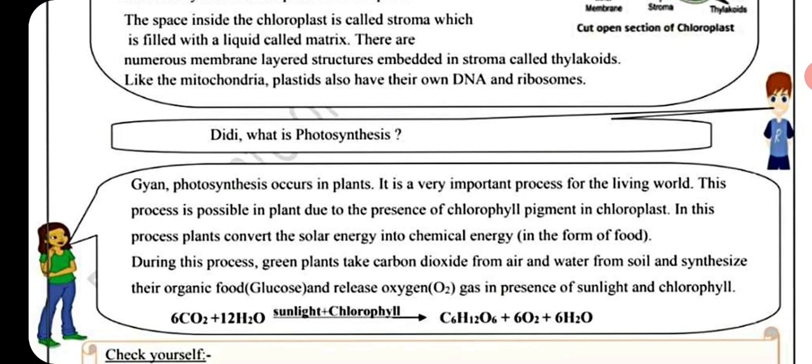Photosynthesis occurs in plants and is a very important process for the living world. This process is possible in plants due to the presence of chlorophyll pigment in the chloroplast. In this process, plants convert solar energy into chemical energy in the form of food.